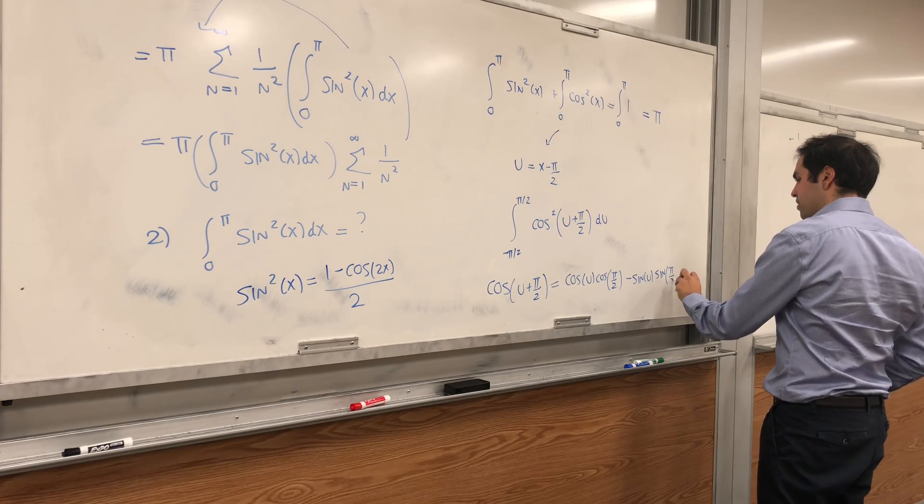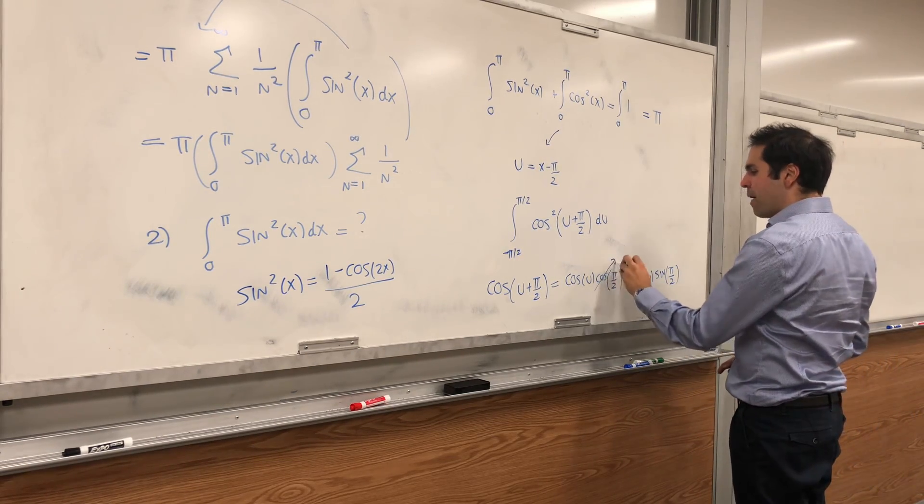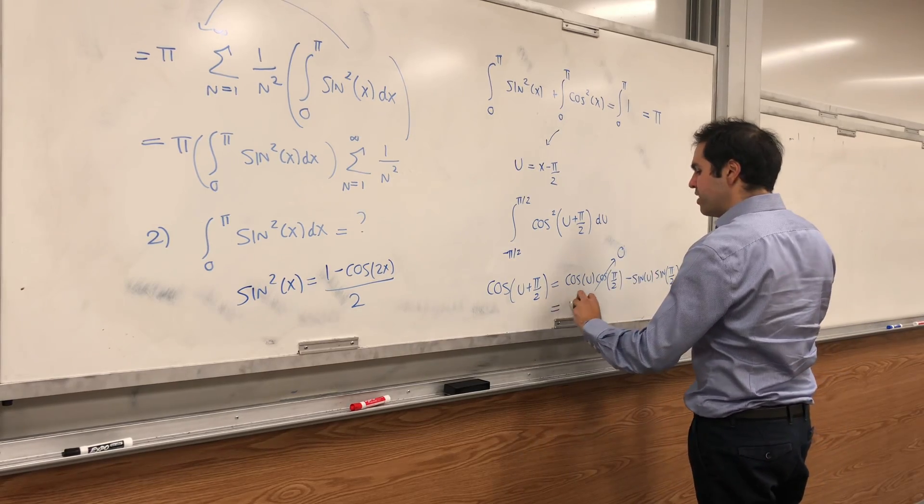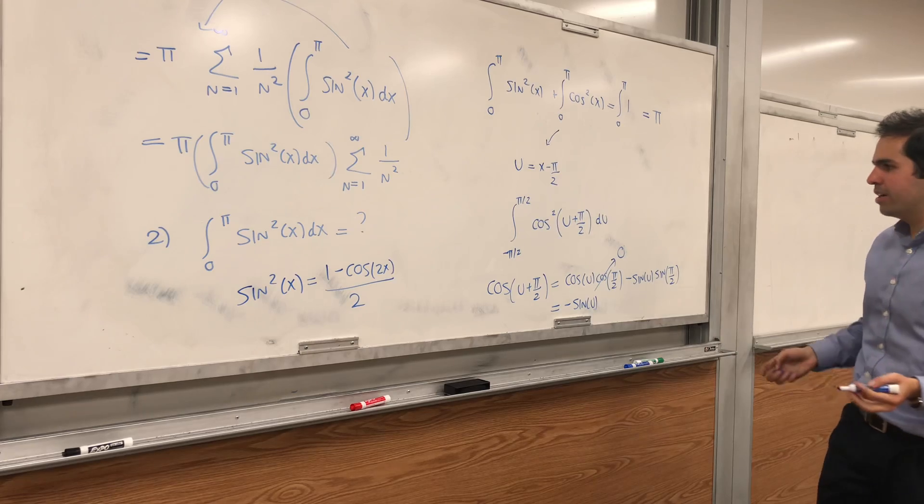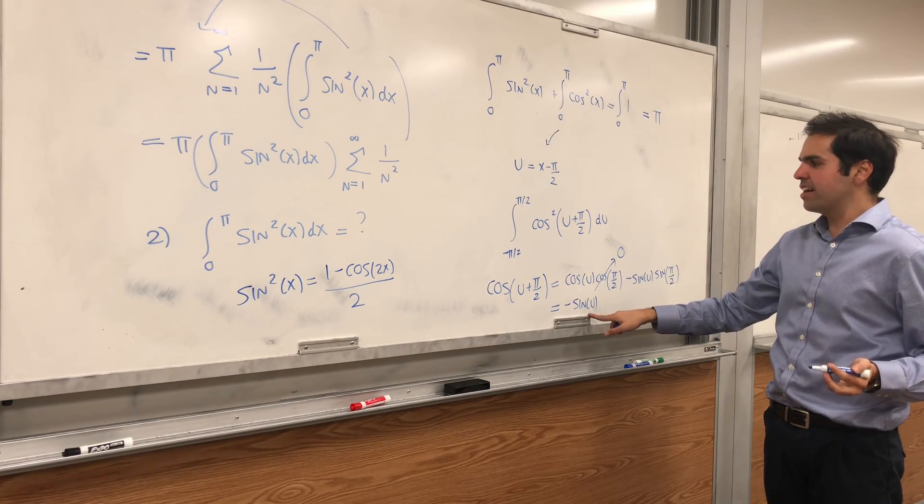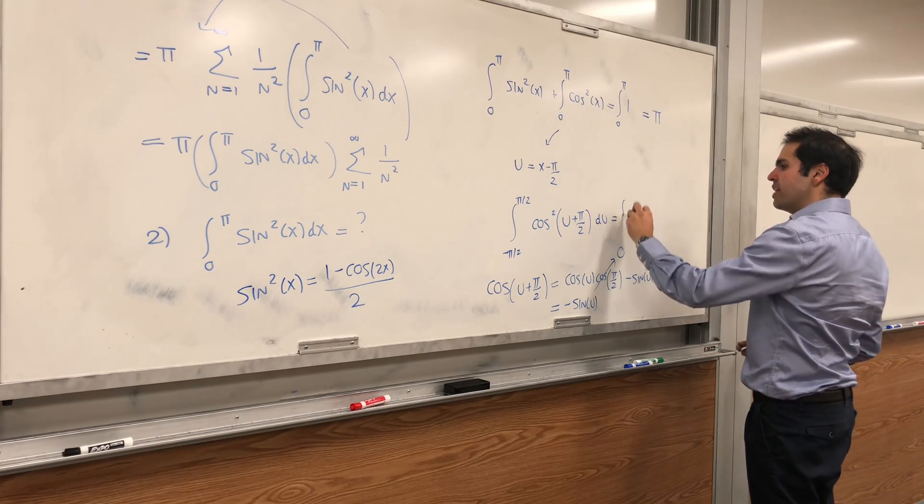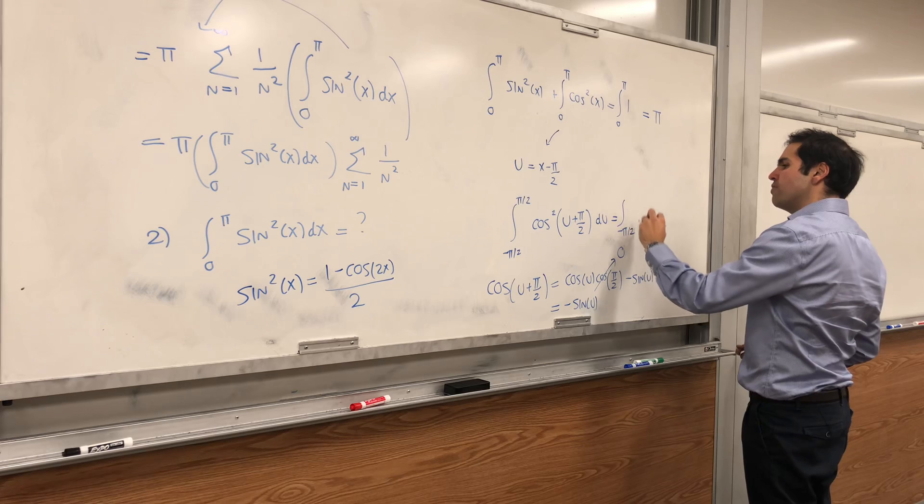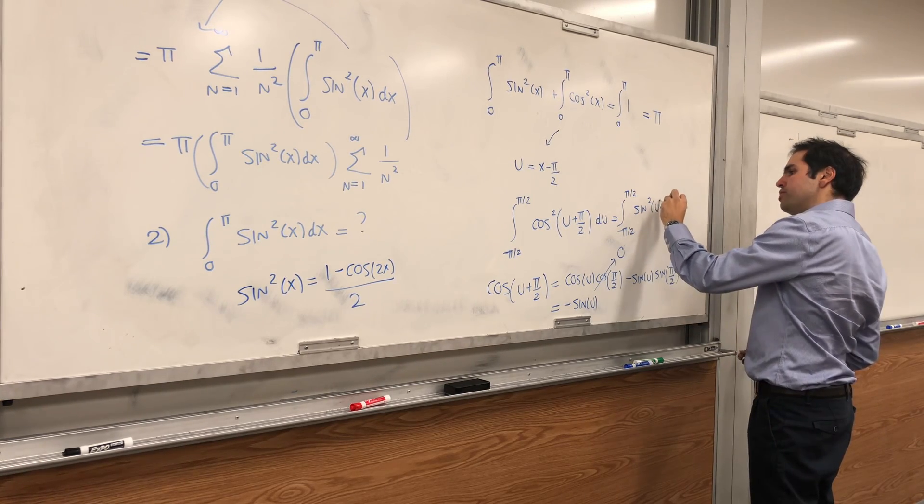Now, cosine of u plus pi over 2, that's just cosine of u cosine of pi over 2 minus sine of u sine of pi over 2. Cosine of pi over 2 is 0, so we get minus sine of u, and sine of pi over 2 is 1. So cosine of u plus pi over 2 is minus sine of u, but if you square it, this becomes a plus. So we get integral from minus pi over 2 to pi over 2 of sine squared of u du.